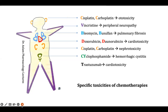These are the specific toxicities of chemotherapies and the tricks to remember them using this diagram. We correlate each alphabet with an organ: C for ear and kidney (Cisplatin/Carboplatin), B for lung (Bleomycin/Busulfan), V for limbs — hands and feet (Vincristine), D for heart (Doxorubicin/Daunorubicin), and CY for urinary bladder (Cyclophosphamide).